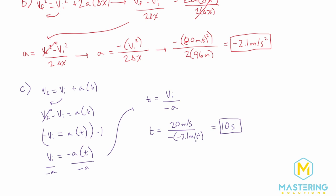If you don't handle the signs carefully, you'll get a negative number. Hopefully most people would catch it and say they can't have a negative time, but it could trip up some students who don't think about it, plug in negative 10, and get it wrong.